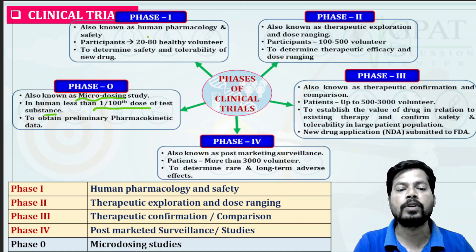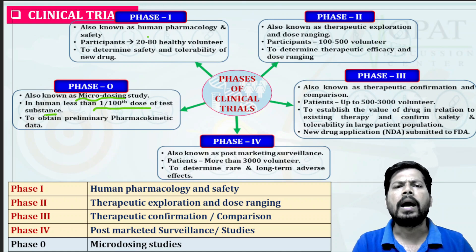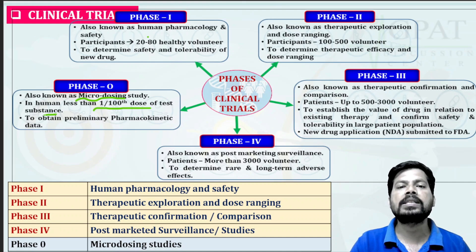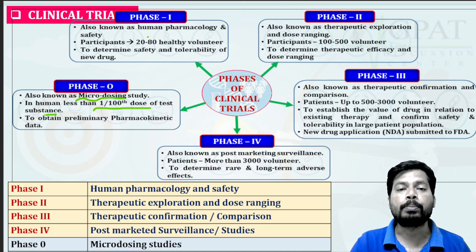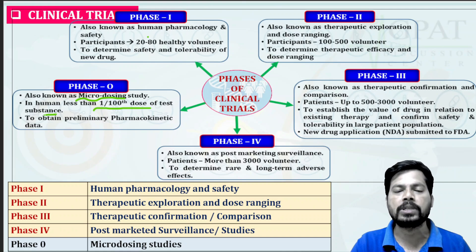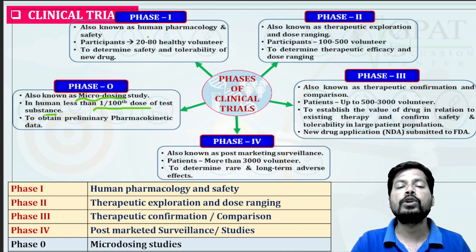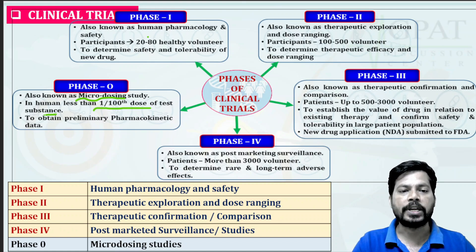In Phase Zero, one-hundredth of the dose of the test substance will be given — for example, only one percent of the full dose of paracetamol. This one percent dose is given to understand the patient's response towards the drug action, whether it is producing good actions, allergic reactions, or idiosyncratic reactions. If the drug is doing good, then slowly the dose is increased.